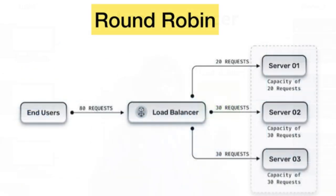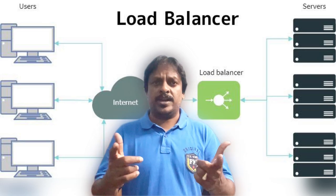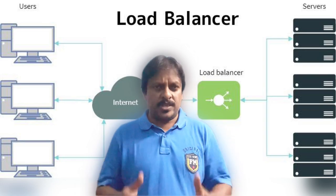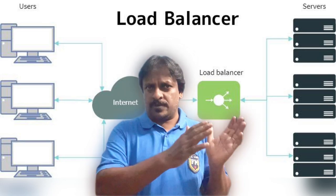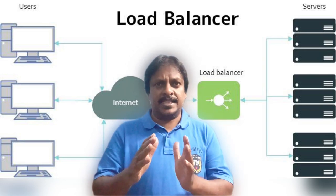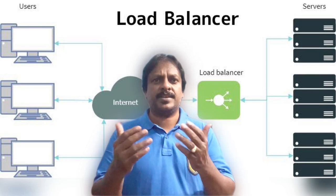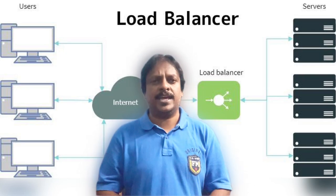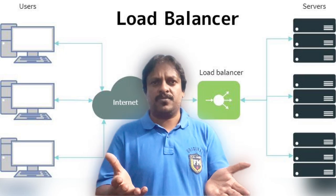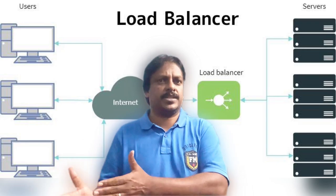Round robin is a commonly used load balancing algorithm. How it works is when a request comes from a client, the request can be served from any server — it can be served from server 1, server 2, or server 3. That's how this load balancing algorithm works.